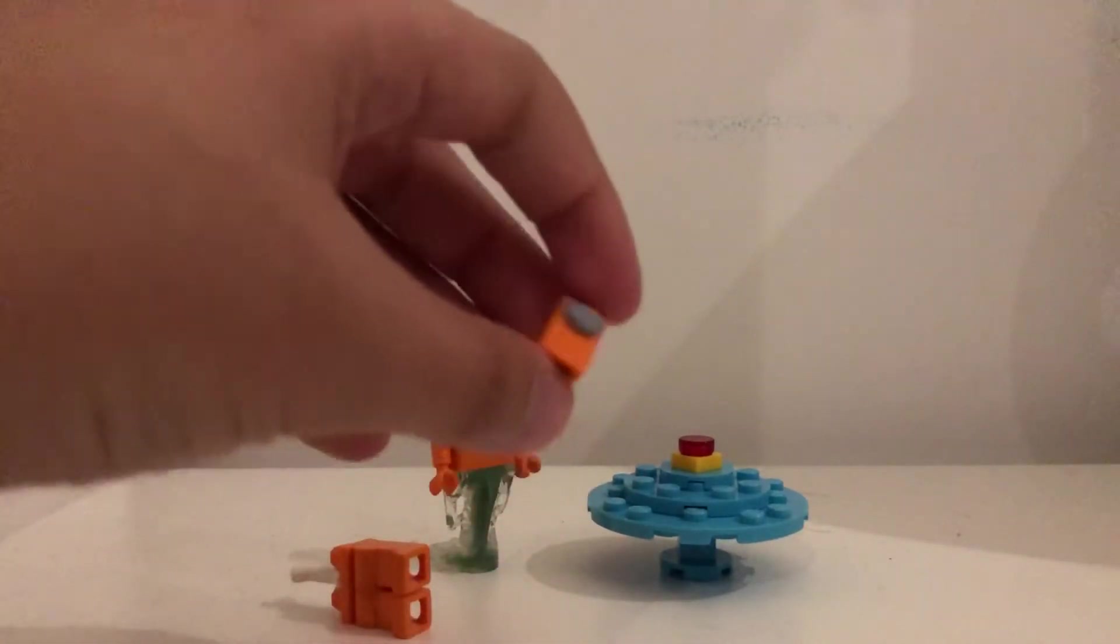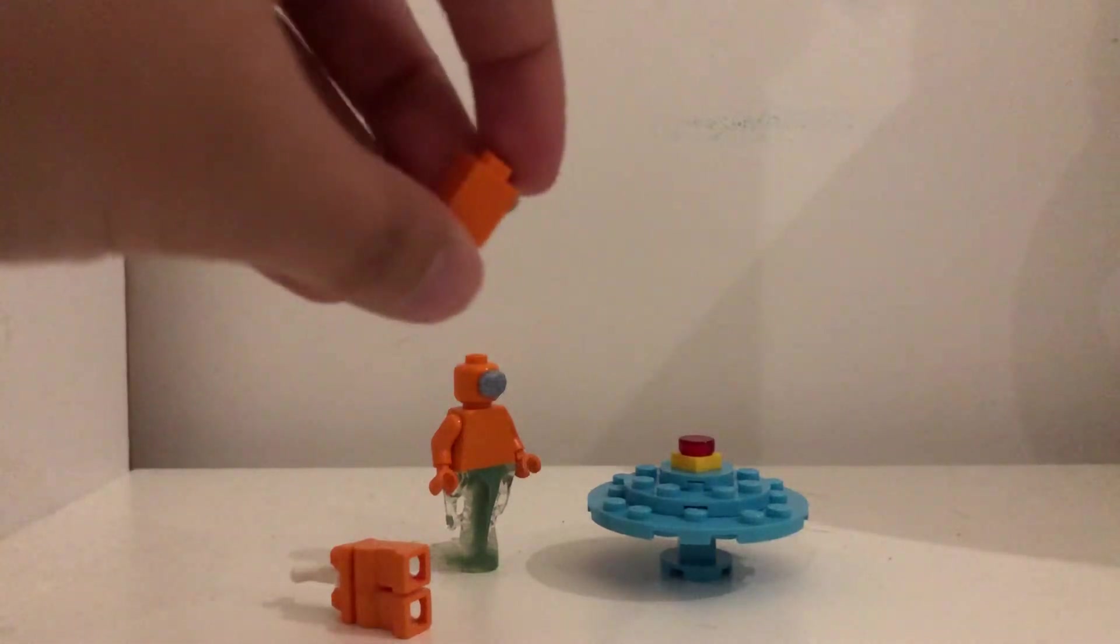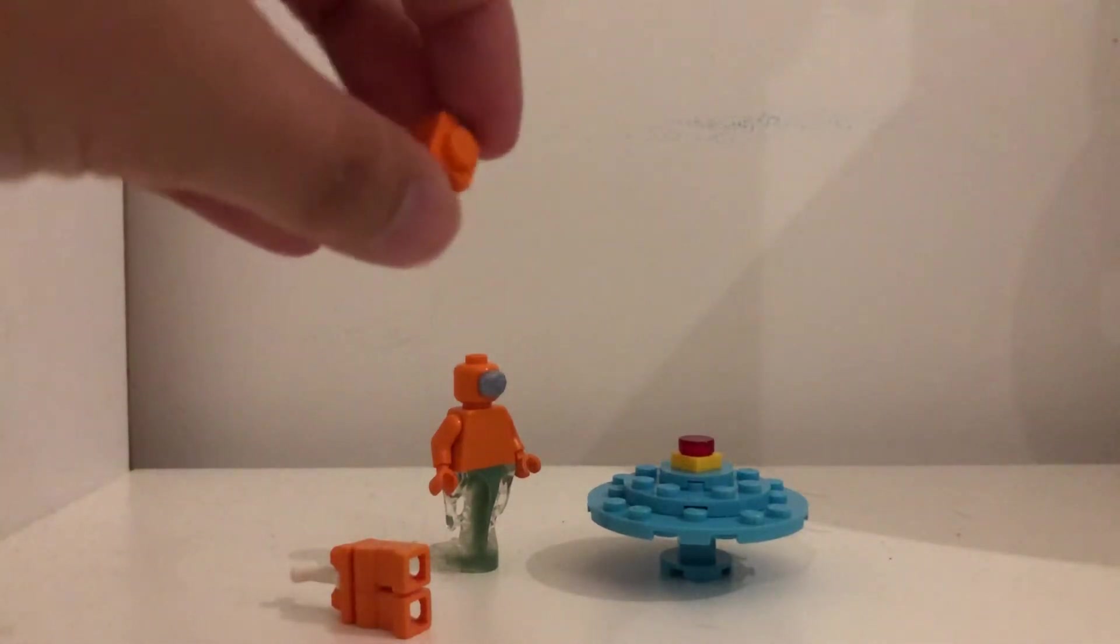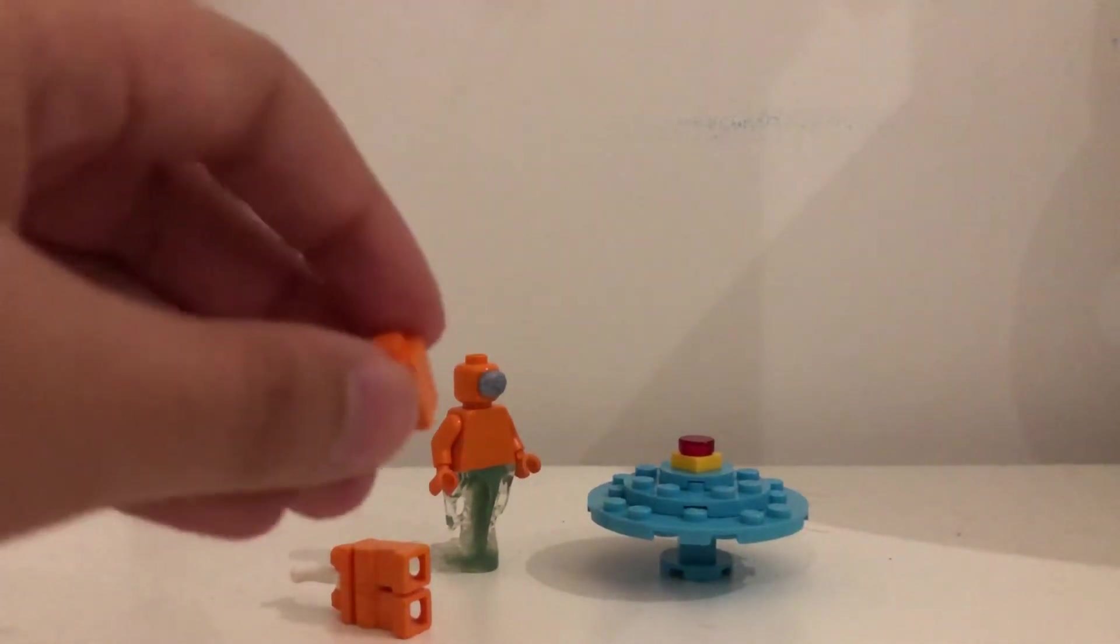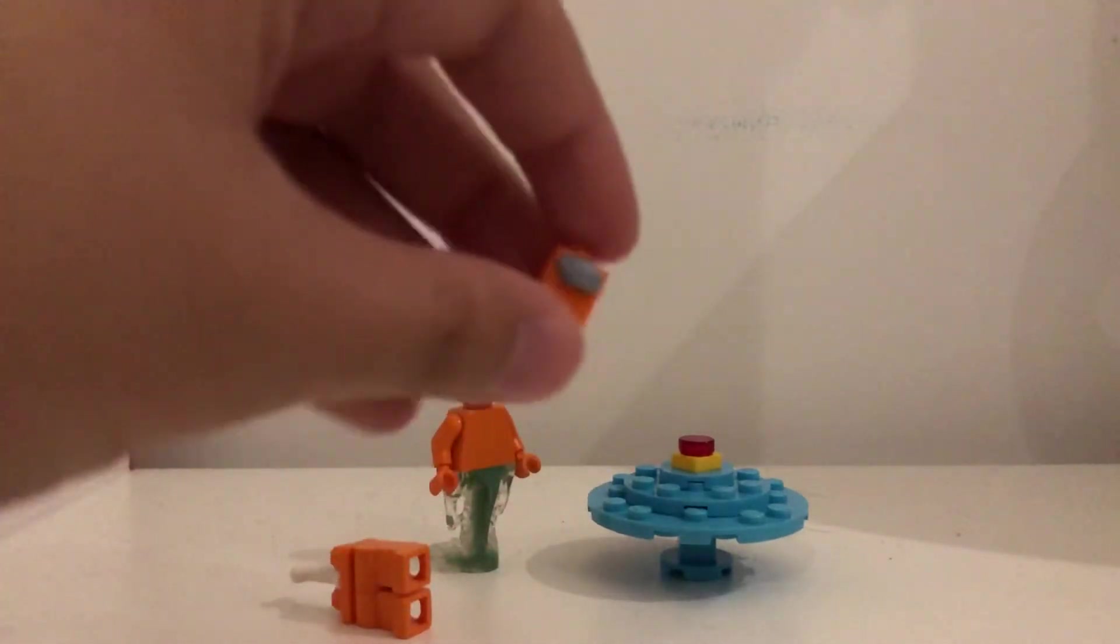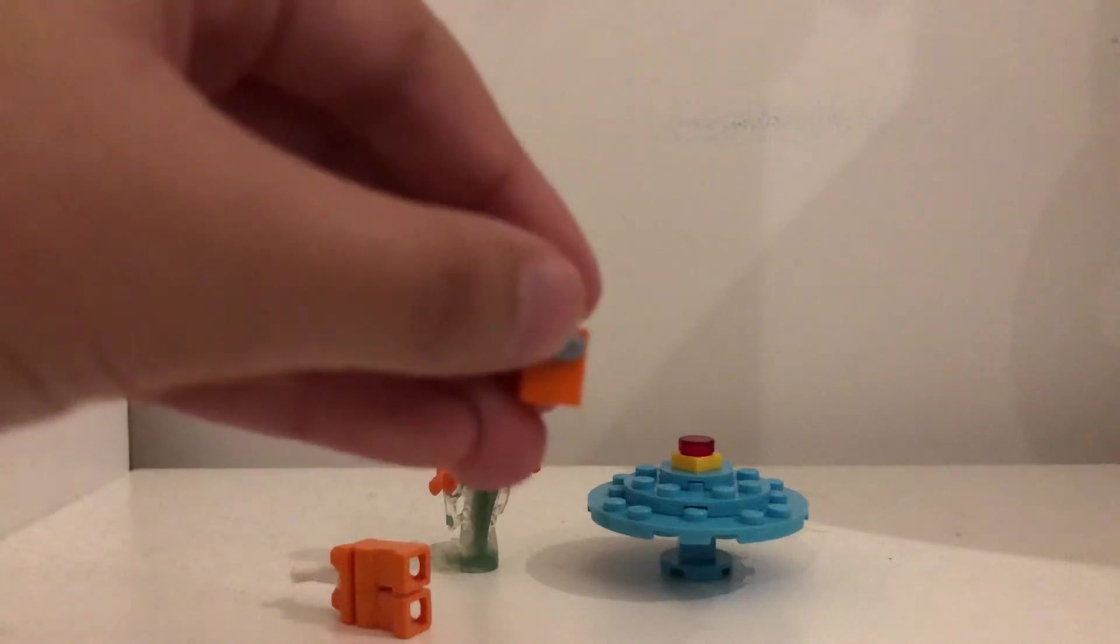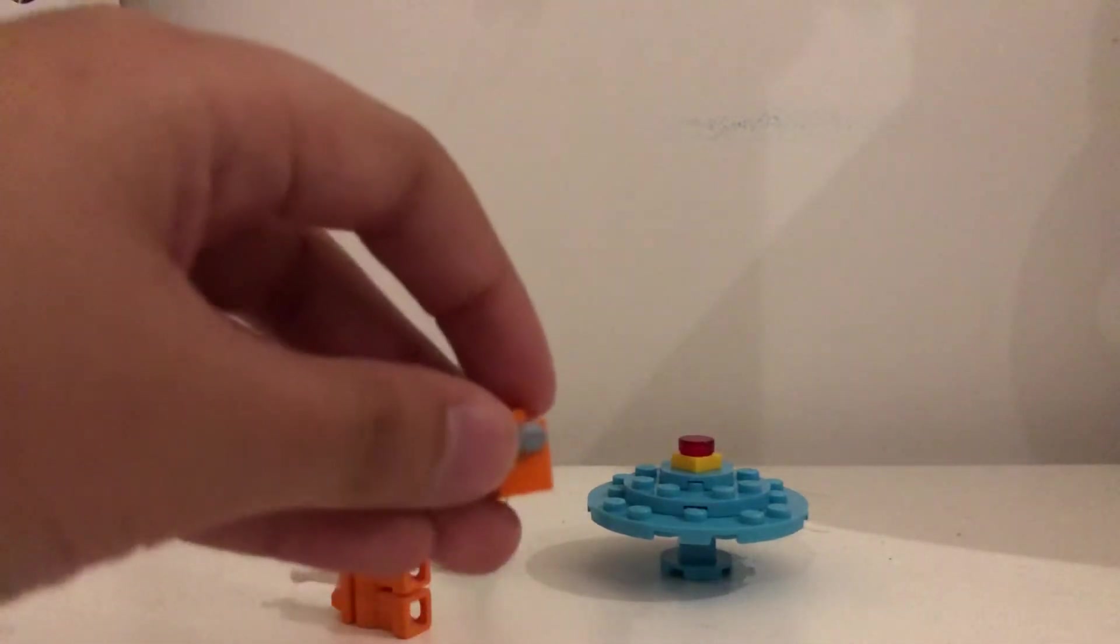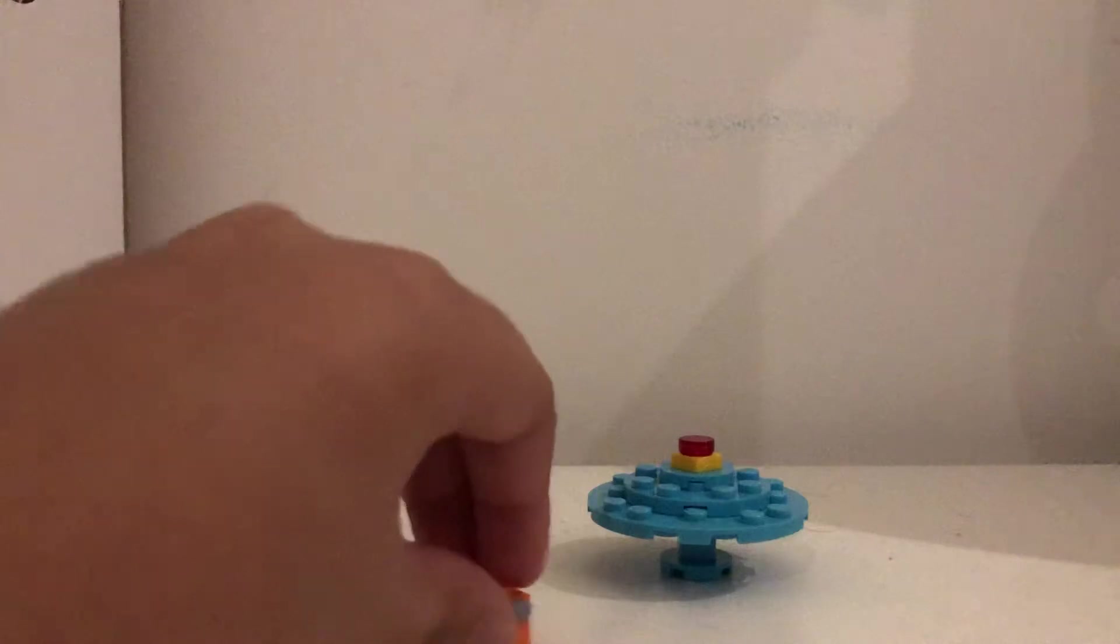For the orange Baby Crewmate, I used this one-by-one orange block, and I got some blue tack and just stuck it to that block for the screen of it, I guess. So that is the Baby Crewmate.